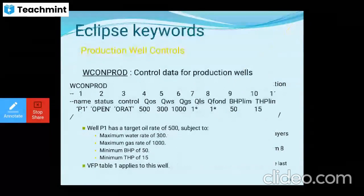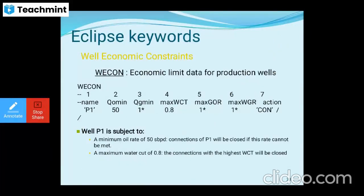In WCONPROD (production well control), the data items are: name, status, control, Q_oil, Q_water, Q_gas, Q_liquid, Q_resv, BHP, THP, and VFP. Well P1 has a target oil rate of 500 with maximum gas rate of 1000, minimum BHP of 50, and minimum THP of 15, using a specified VFP table.